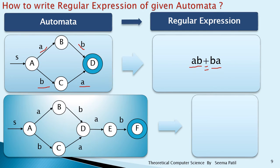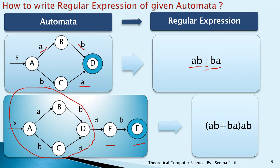The next example is the same previous diagram, but with two additional states E and F attached. The regular expression for the previous part is AB + BA as before. Then E and F have A and B connected in serial fashion, so write AB outside the bracket. The complete regular expression is (AB + BA)AB.